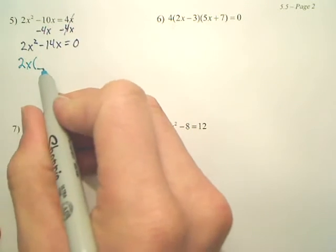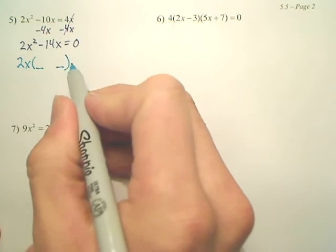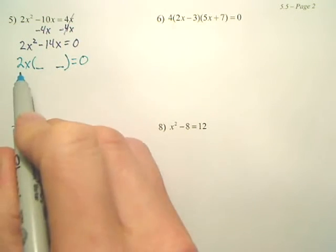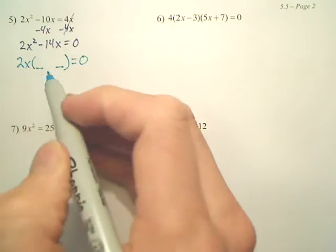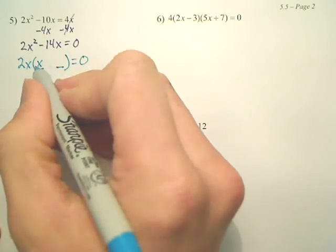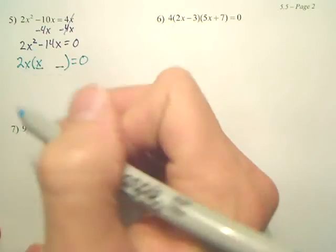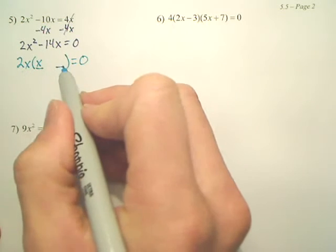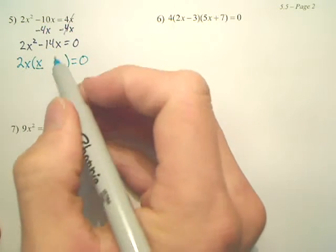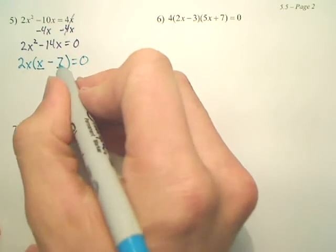So when I pull out the 2x, that leaves me two things left over. 2x times what gives you 2x squared? Hopefully you notice that's x. 2x times x gives you 2x squared. 2x times what gives you negative 14x? Hopefully you notice that's a negative 7.